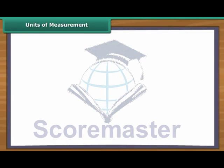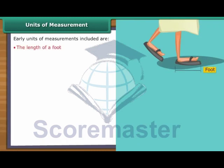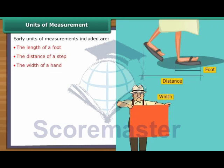Units of Measurement. In the early days, units of measurements included the length of a foot, the distance of a step and the width of a hand. However, these were difficult to maintain as the length of a foot would vary from person to person. To standardise the units, a metric system was put in place.